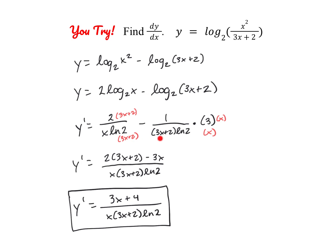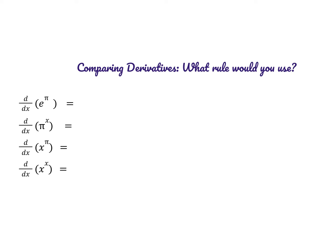To simplify the derivative, I combined the two fractions by creating a common denominator. Now let's take derivatives of a few functions that look similar but are actually different. First, the derivative of e to the power of pi: remember, e is a constant and so is pi, so e to the power of pi is just some constant value. Its derivative is zero — we use our constant rule, so don't be fooled into thinking it's an exponential or power function.